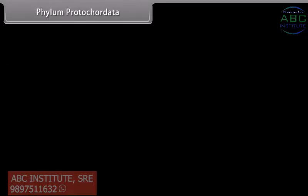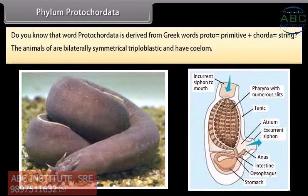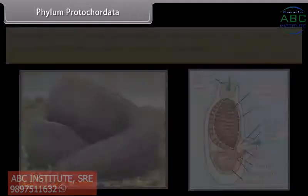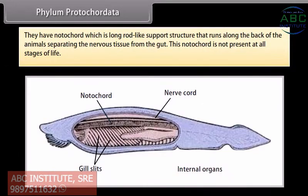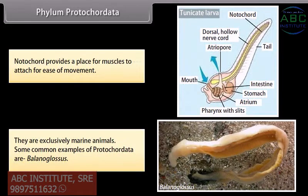Phylum Protochordata. The word protochordata is derived from Greek words 'proto' meaning primitive, plus 'chorda' meaning string. The animals are bilaterally symmetrical, triploblastic and have a coelom. They have a notochord, which is a long rod-like support structure that runs along the back of the animals separating the nervous tissue from the gut. This notochord is not present at all stages of life. Notochord provides a place for muscles to attach for ease of movement. They are exclusively marine animals. A common example is Balanoglossus.